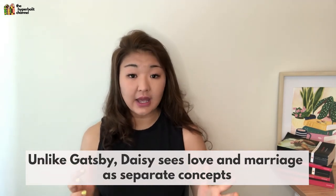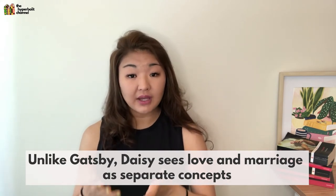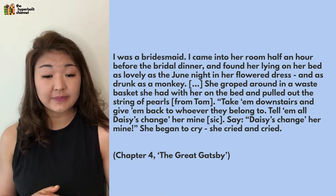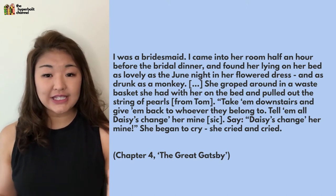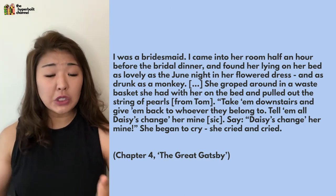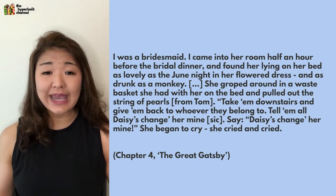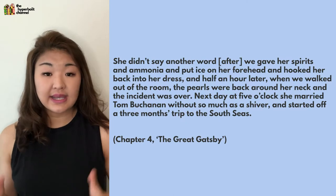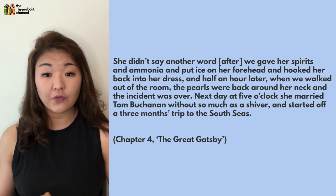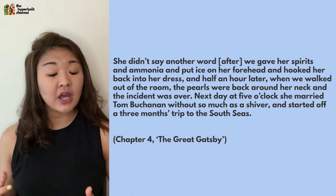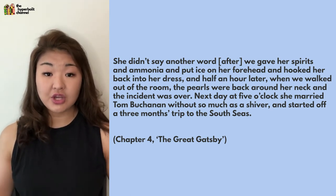This is why for Daisy, love and marriage are separate concepts — it's entirely reasonable to her that she loves Gatsby and yet wants to remain married to Tom, whereas for Gatsby this is unfathomable. It's also why on the day of her wedding to Tom, Daisy bawls her eyes out in drunken misery over Gatsby's letter but is finally able to pull herself together to walk down the aisle. As Jordan Baker recounts: 'I was a bridesmaid. I came into her room half an hour before the bridal dinner and found her lying on her bed, as lovely as the June night in her flower dress, and as drunk as a monkey. She groped around in a wastebasket she had with her on the bed and pulled out the string of pearls from Tom. Take them downstairs and give them back to whoever they belong to. Tell them all Daisy's changed her mind. She began to cry — she cried and cried.'